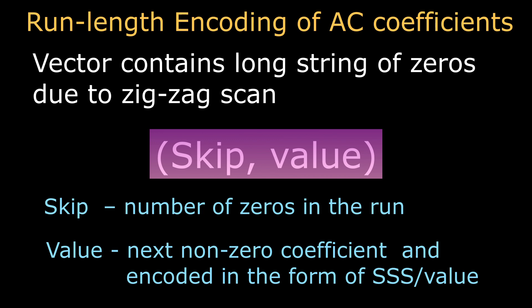It is encoded in the form of SSS/value, where SSS represents the number of bits required to represent the value, and the value represents the actual binary representation. In this way the AC and DC coefficients are encoded in JPEG compression standard. Thank you.